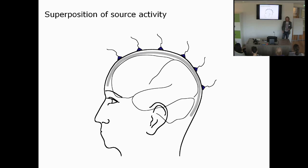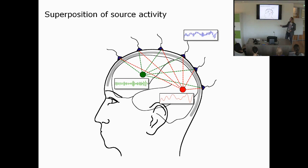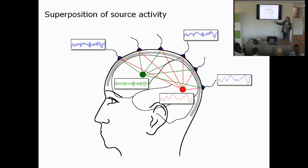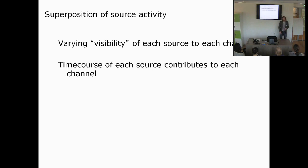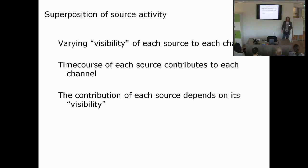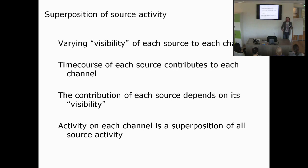Let's look again at the superposition of source activity. If we have a source at the back of the brain and a simultaneous source at the front, a channel in between will pick up activity from both sources. Channels at the back primarily pick up occipital source activity and channels at the front primarily pick up frontal source activity, but there's always overlap. What we have is a varying visibility of each source to each channel, and the time course of each source contributes to each channel depending on this visibility. The activity at each channel is always a superposition of all source activity.